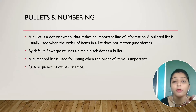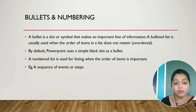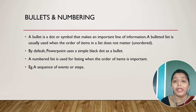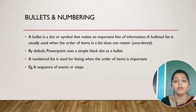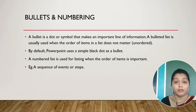A bullet marks an important line of information. A bulleted list is usually used when the order of items in a list does not matter. For example, when you are writing a list for your preparations at home, you make a sign — an arrow or a dot — for each item one by one.